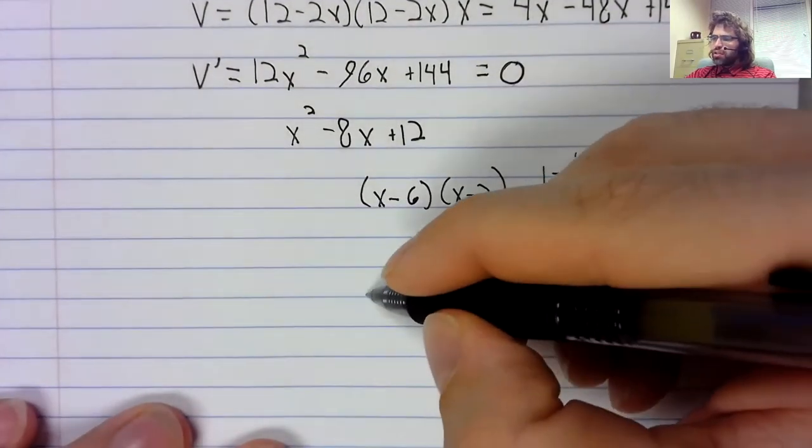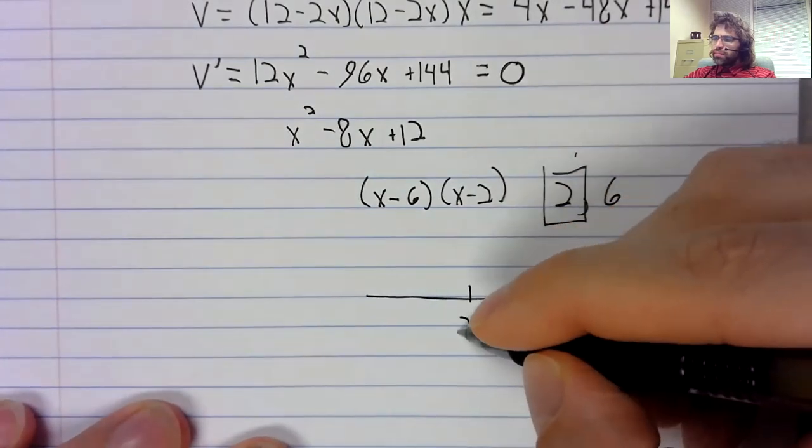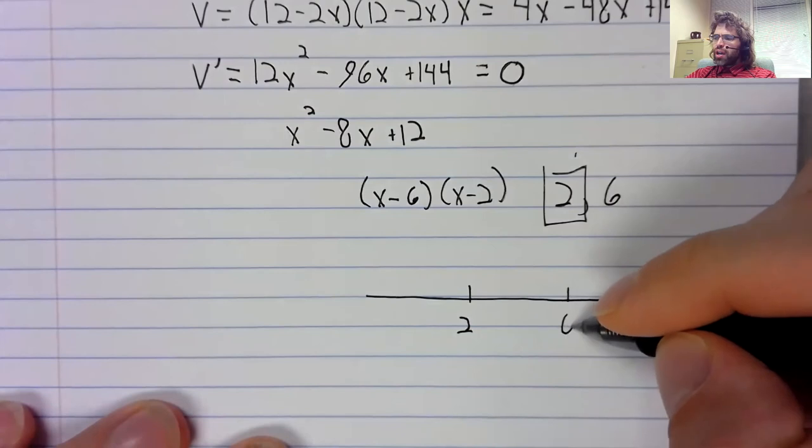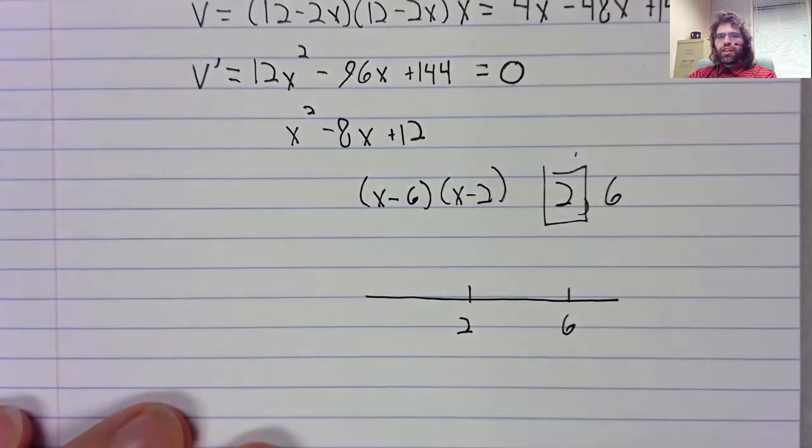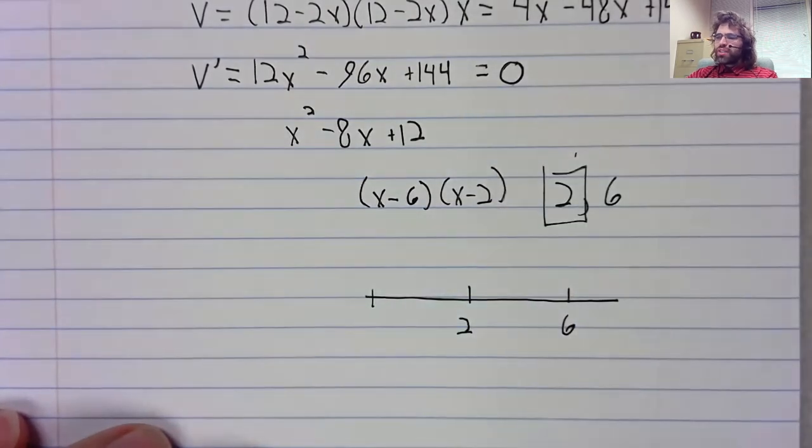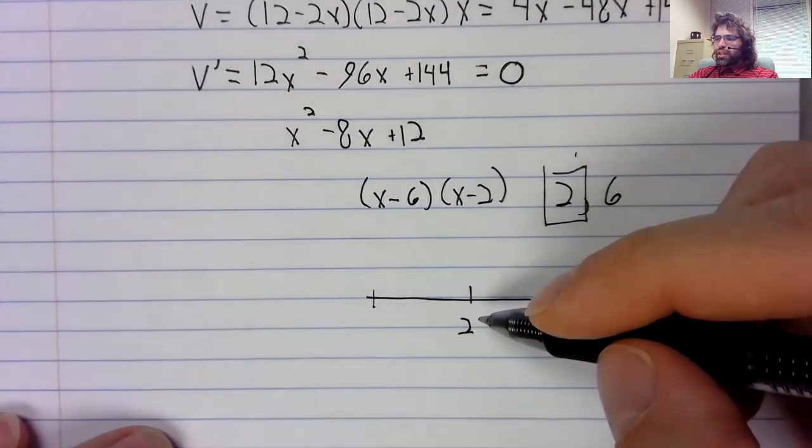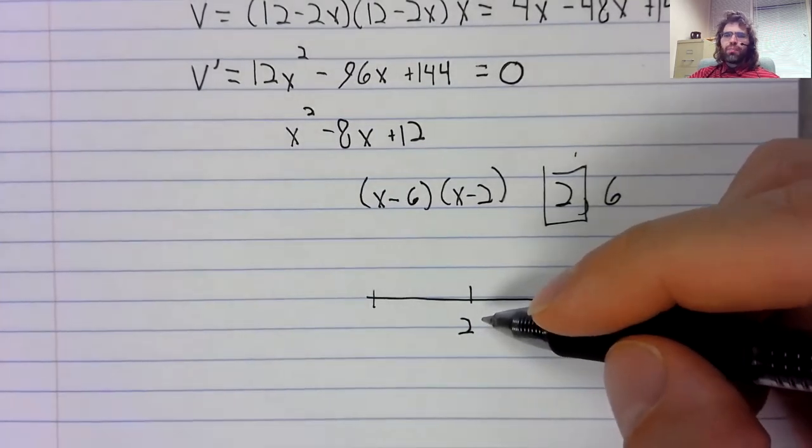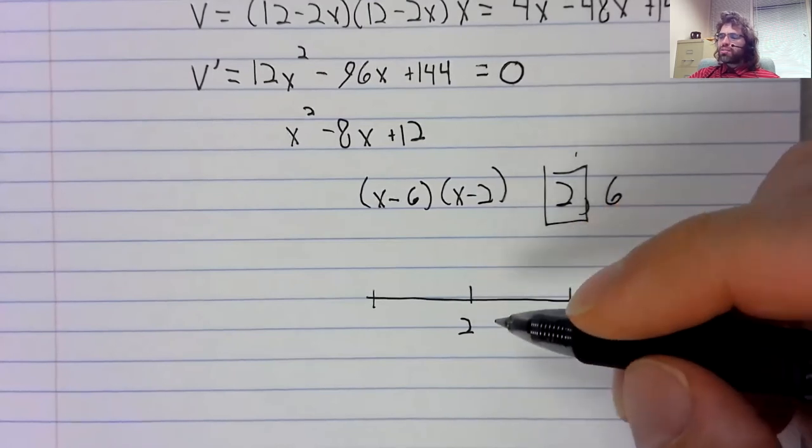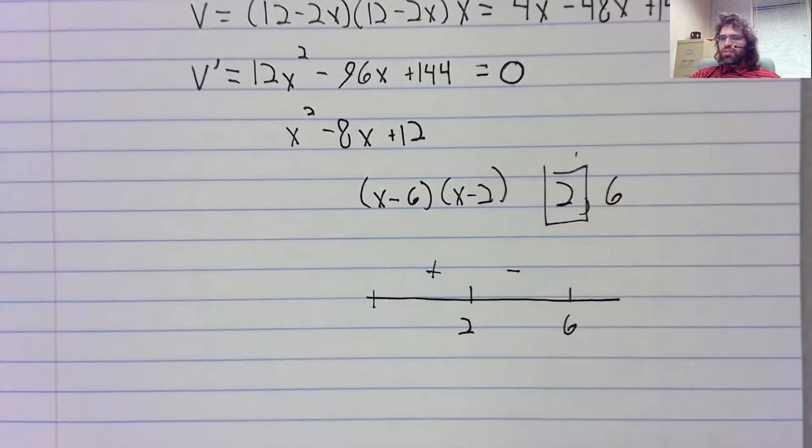And you can verify using the first derivative test, or even the second derivative test, if you wanted to, that two really is a local maximum. We go from positive to negative there.